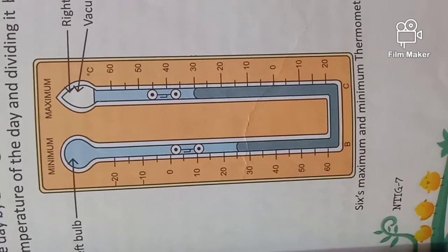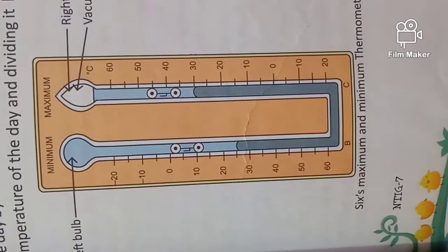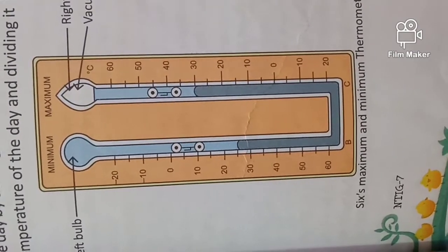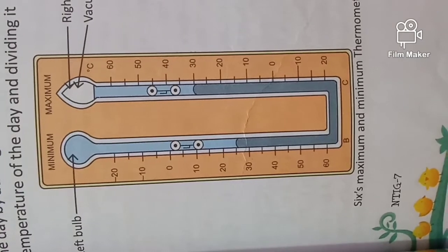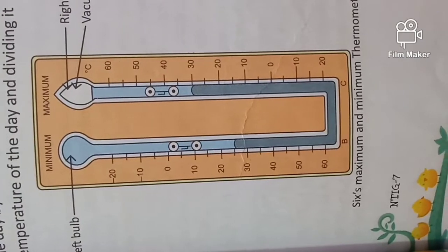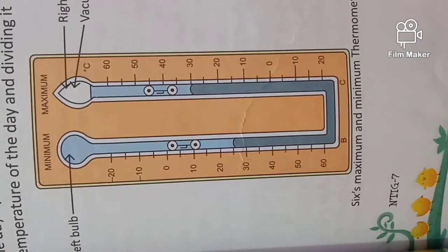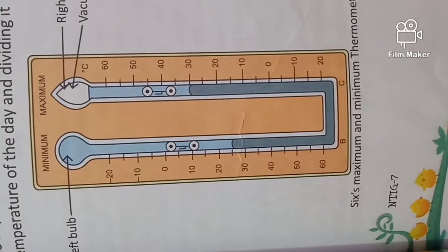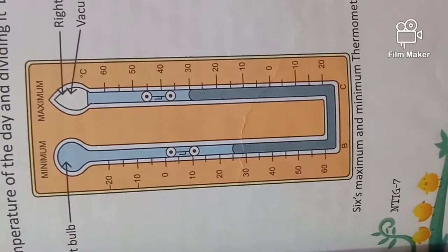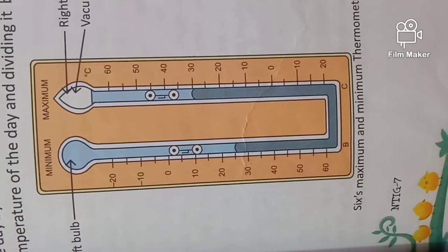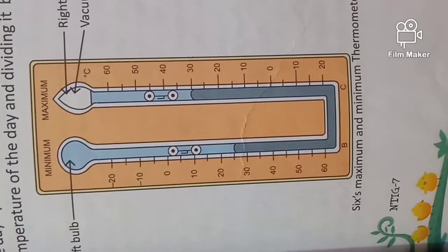In the Celsius scale, the freezing point of water is zero degrees Celsius and the boiling point of water is 100 degrees Celsius.